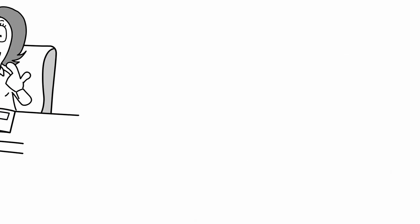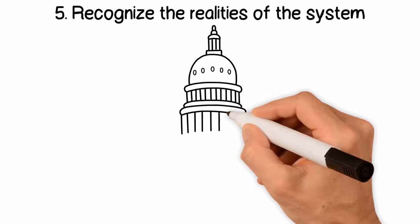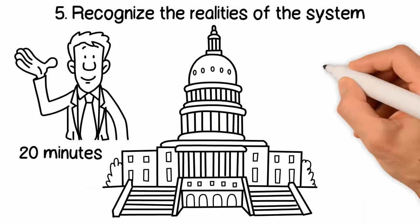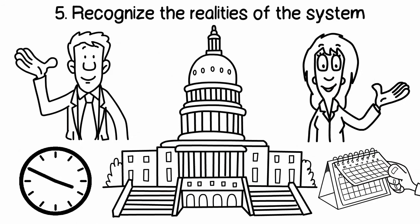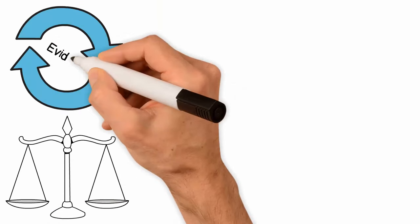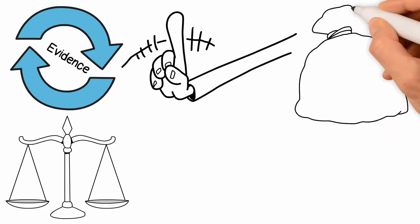Number five: recognize the realities of the system. Courts each have their own ways of doing things. Some courts only allow 20 minutes per side for temporary orders hearings, some allow all day, some allow multiple days. Most courts don't like repetitive evidence. In fact, it's objectionable.